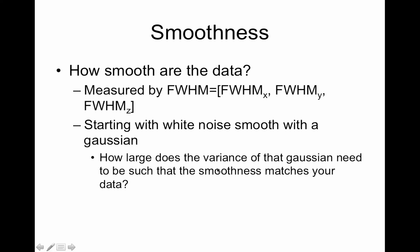And so the idea is you start with white noise and smooth it with a Gaussian. And you have to find how large the variance of the Gaussian needs to be such that the smoothness matches your data. This is just a hand wavy description of how this is done. But that's the general idea.